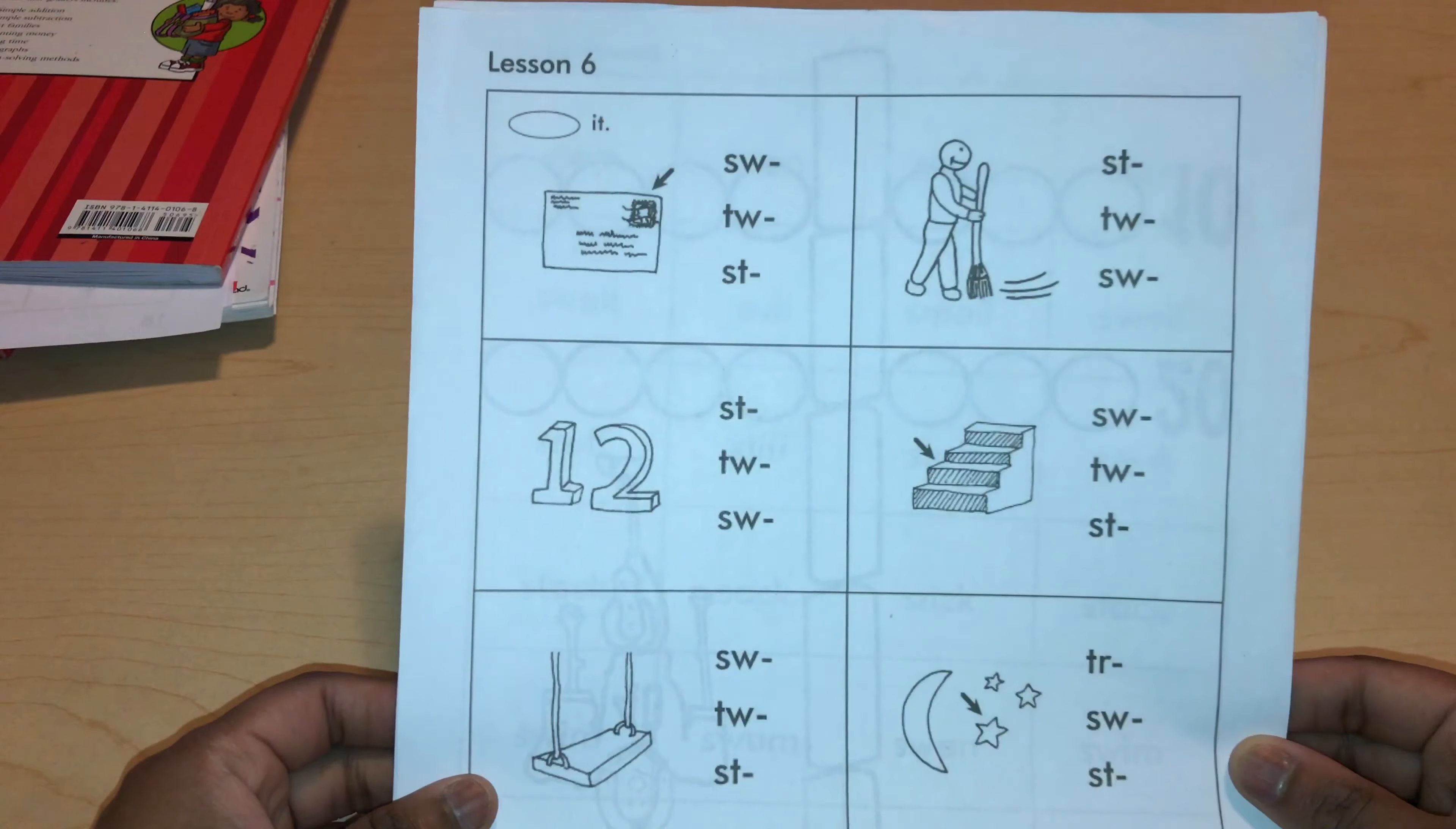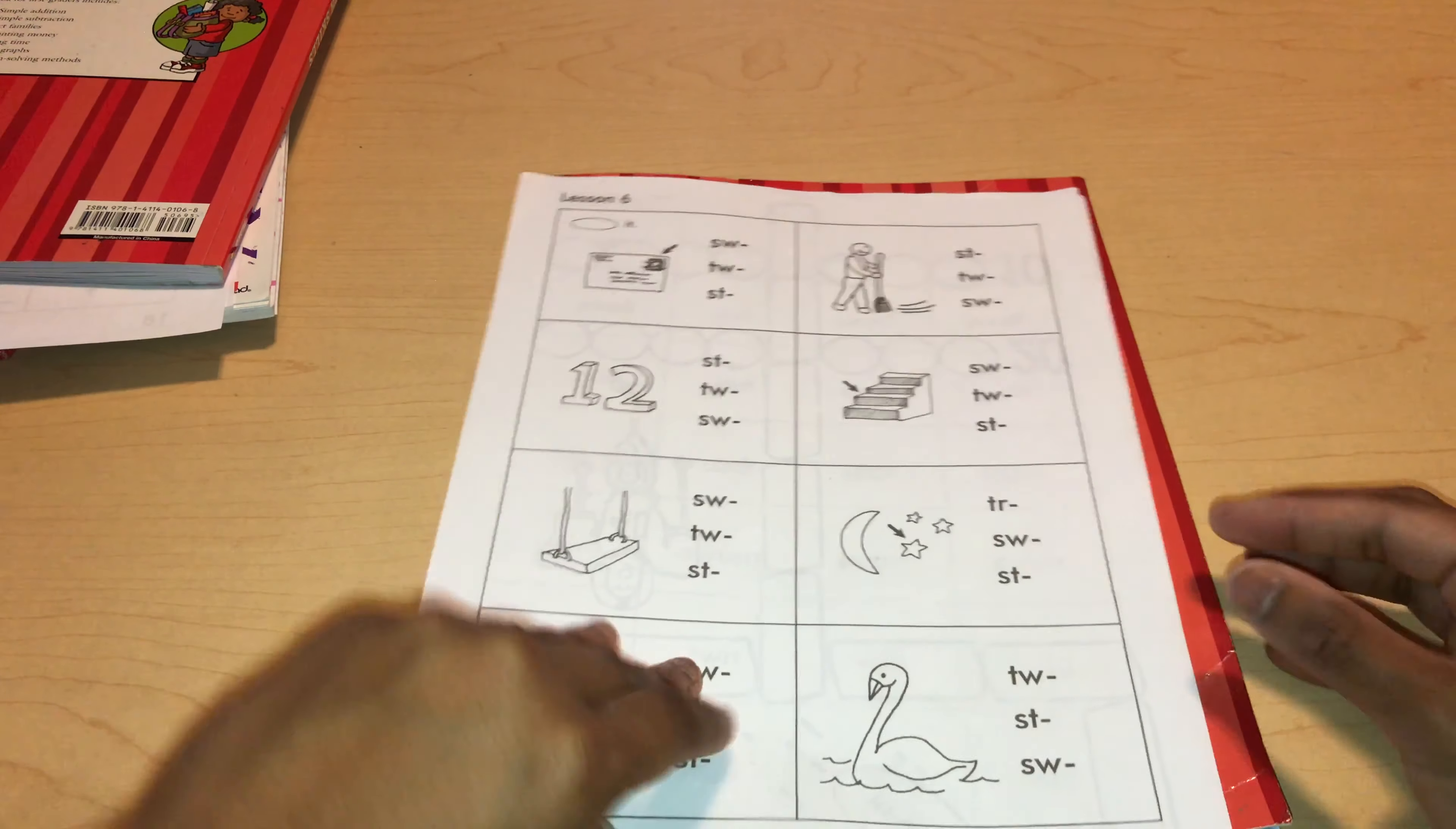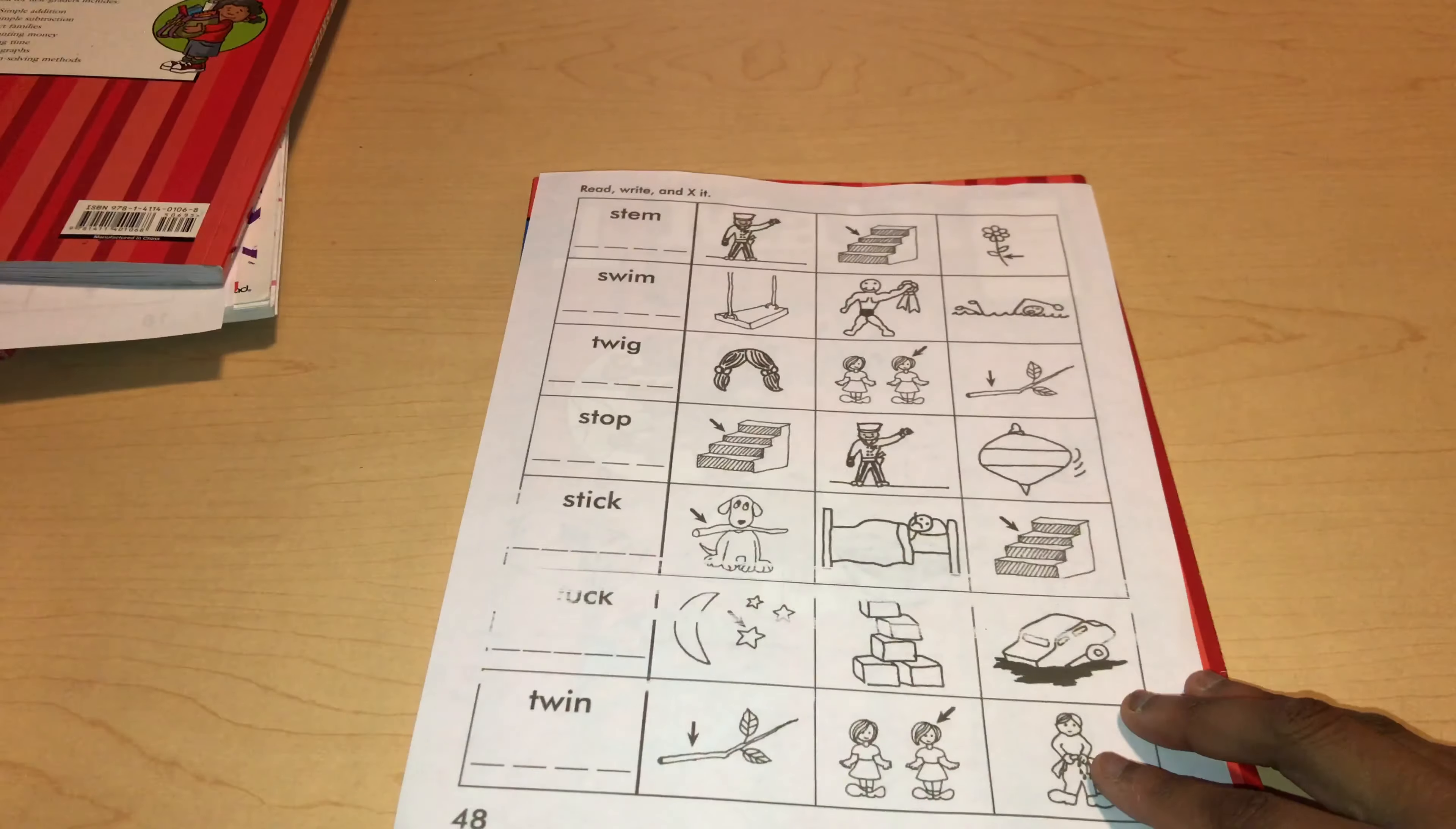His three pages from Explode the Code book two are going to be this one, this one, this one, and this one.